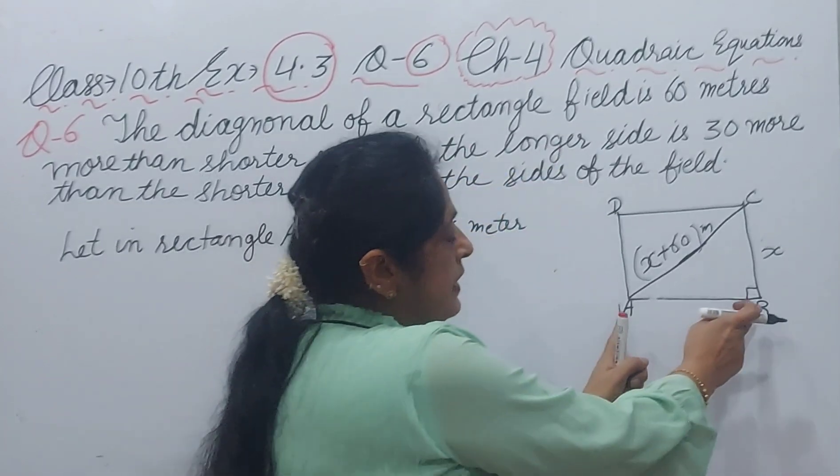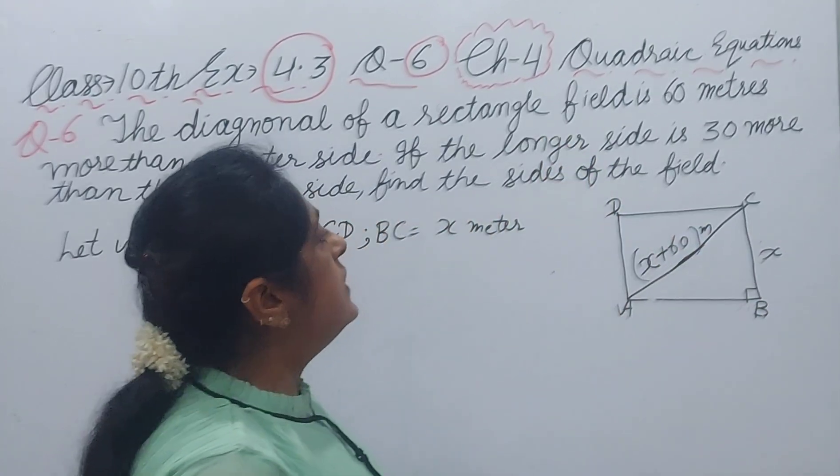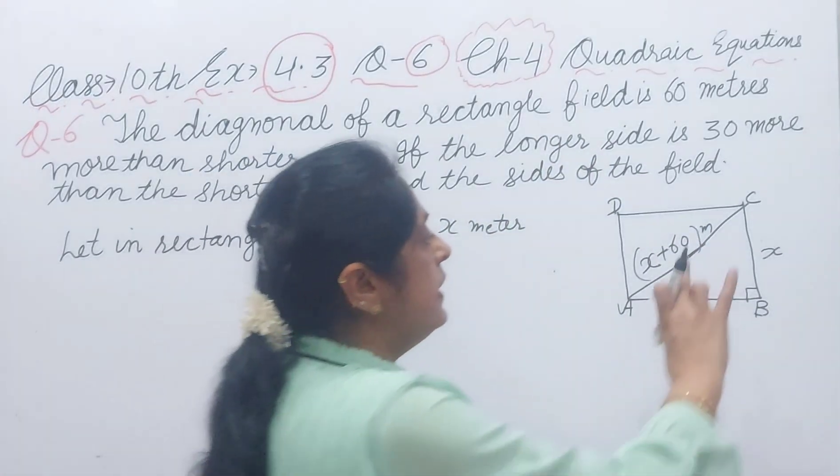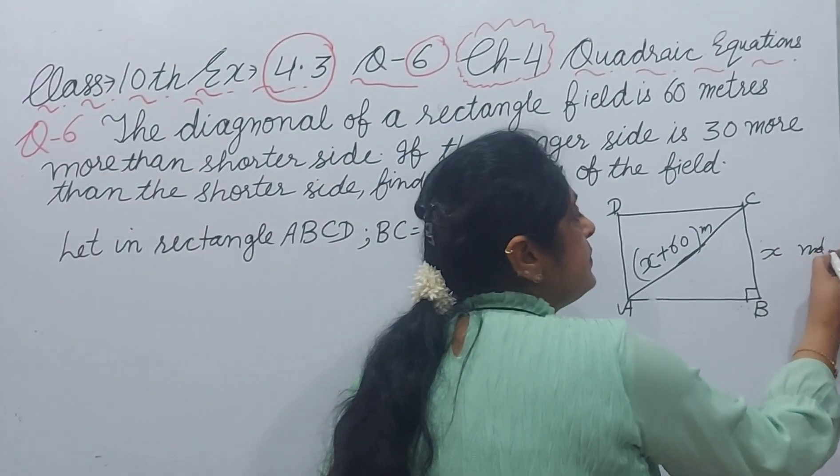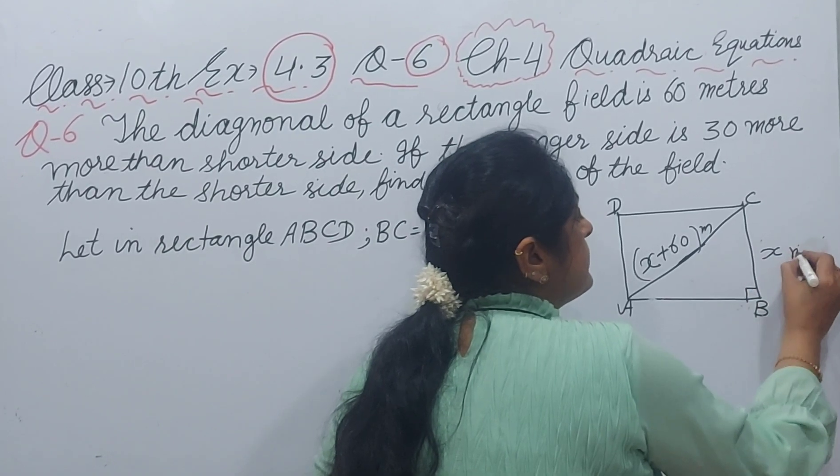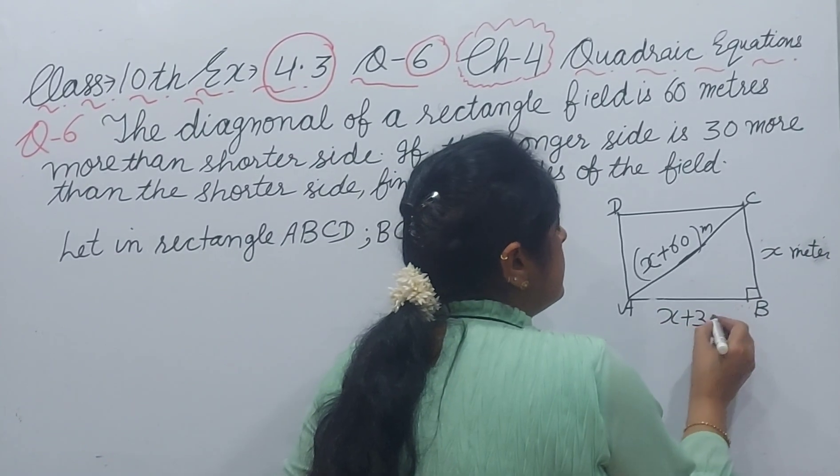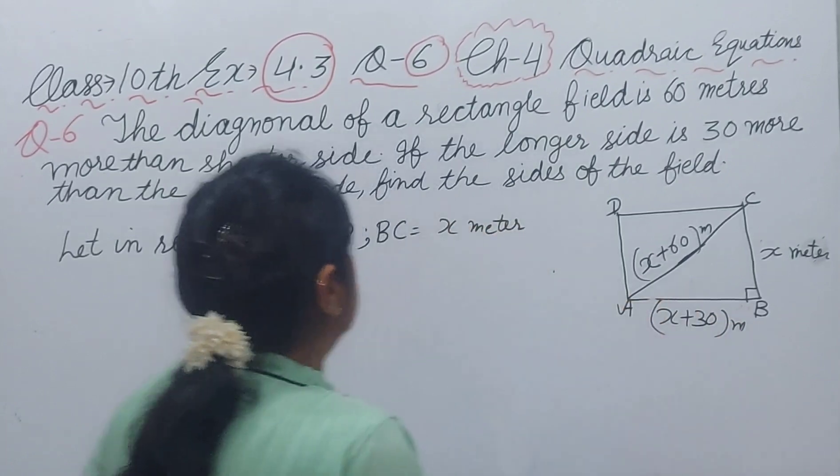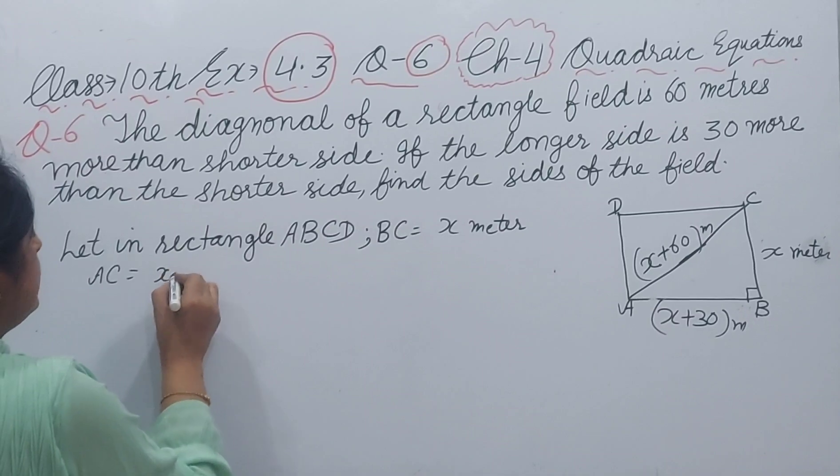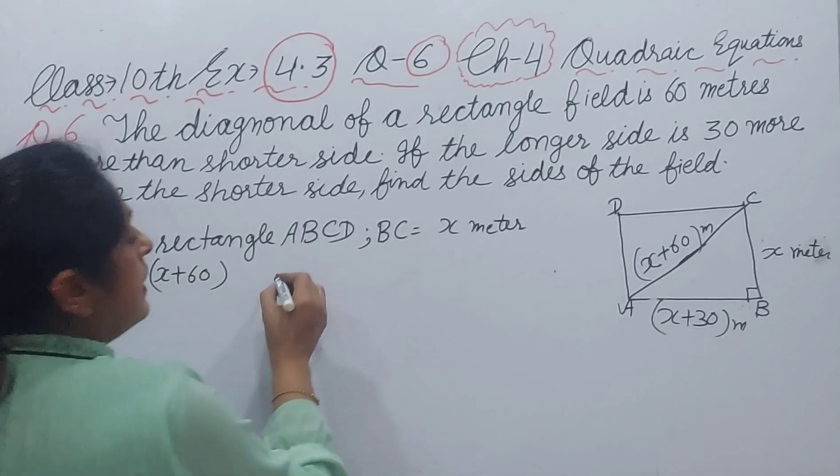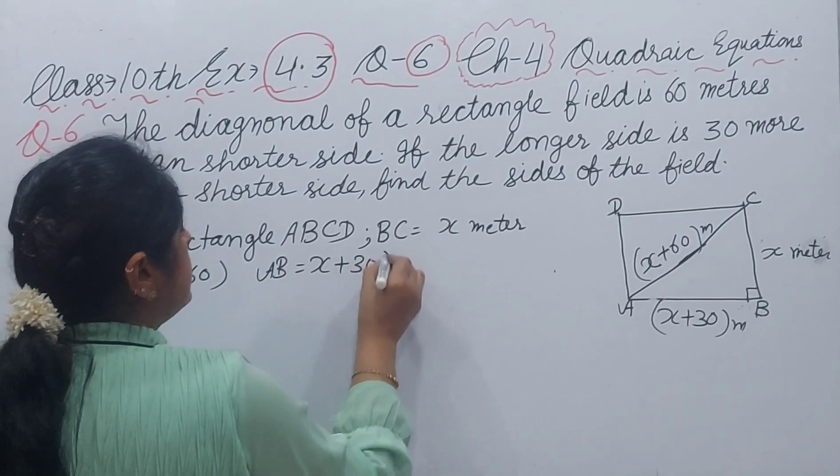Understood? Now, if the longer side, this is a shorter, this is a longer and this is a diagonal. And longer side is 30 meter more than shorter side. Our shorter side BC is X meter. Then it is X plus 30 meter. BC is X, AC is X plus 60 meter, and AB is X plus 30 meter.